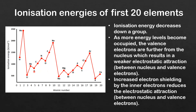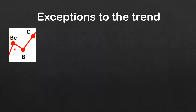Next we'll look at the exceptions to the trend: the decrease in ionization energy between beryllium and boron, nitrogen and oxygen, magnesium and aluminium, and phosphorus and sulfur.